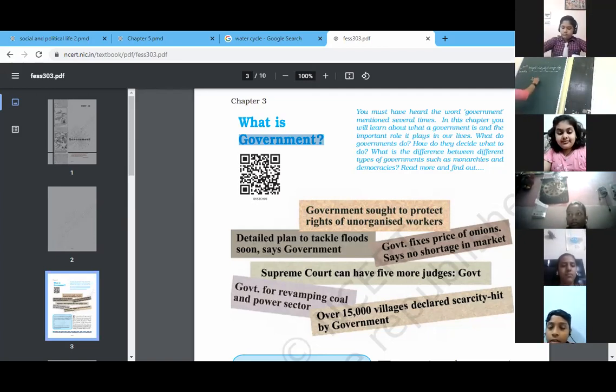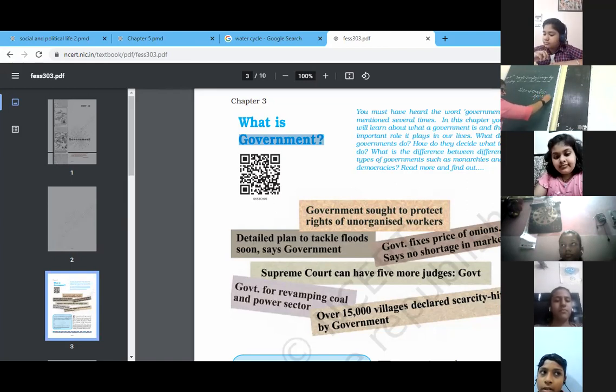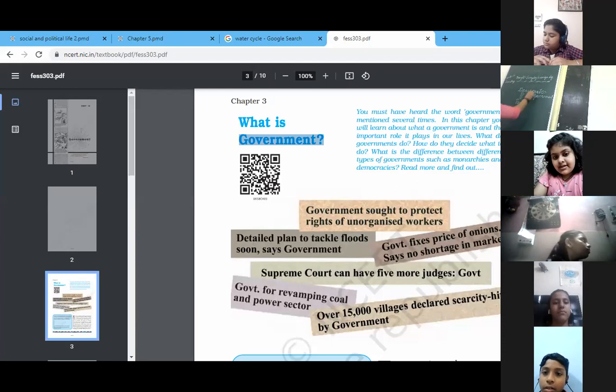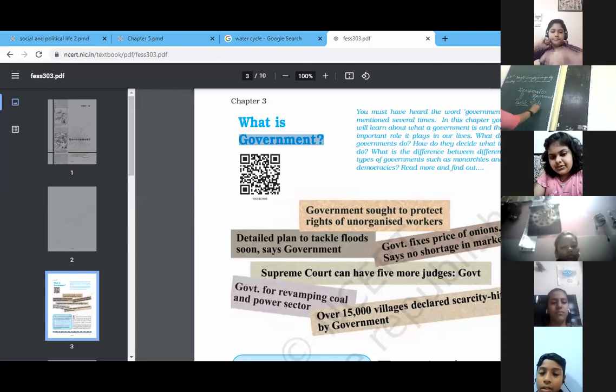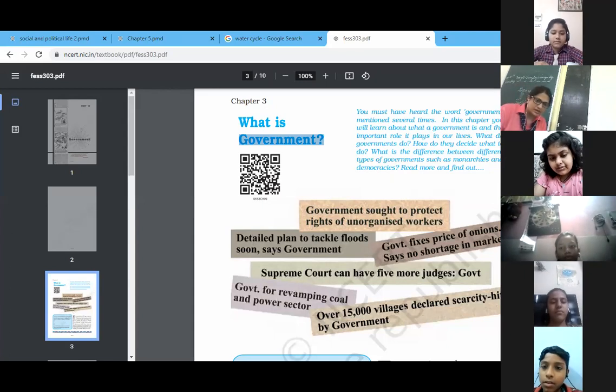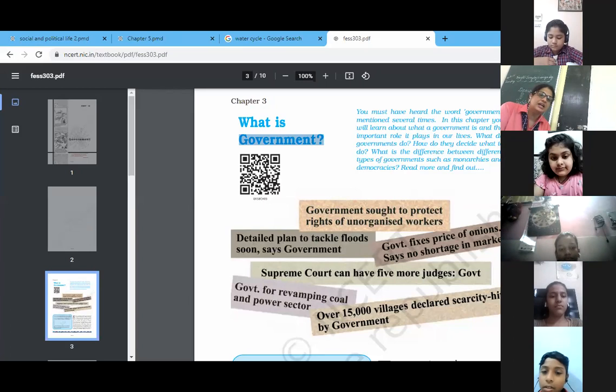Our country has a democratic government. Democratic government means people and cracy means rule. The country where the people rule the country, where the people have power, that country has a democratic government.